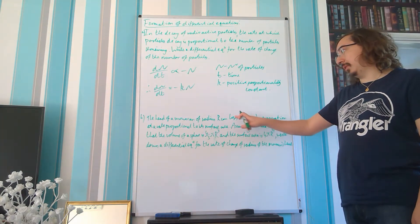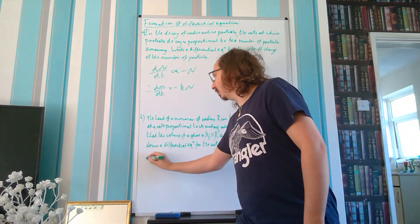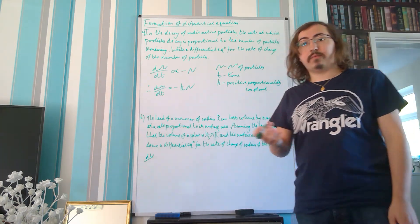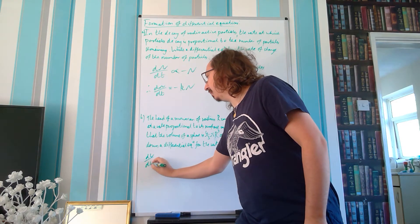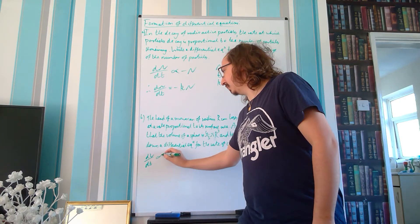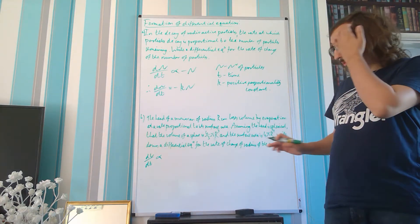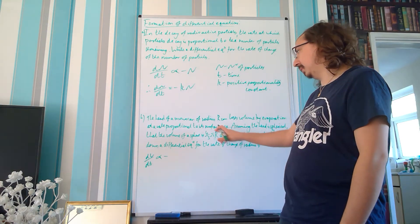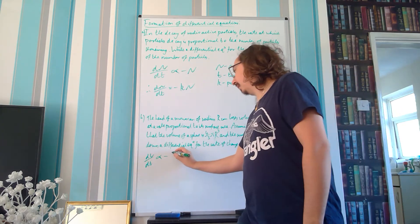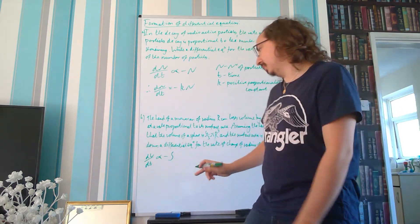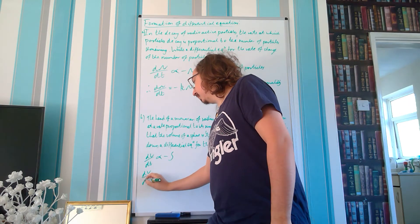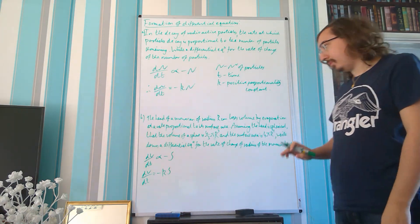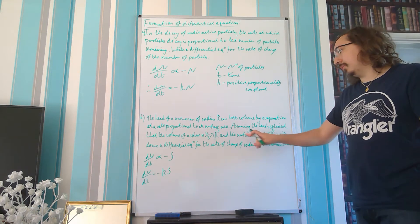What's actually changing here is the volume — it's losing volume. So we have dV, and it's losing it at a rate, meaning with respect to time: dV/dt. It's proportional to something, and since it's losing volume (a decrease) we need a minus sign. It's proportional to the surface area, so let's call that capital S. Replacing the proportionality symbol: dV/dt equals minus kS.